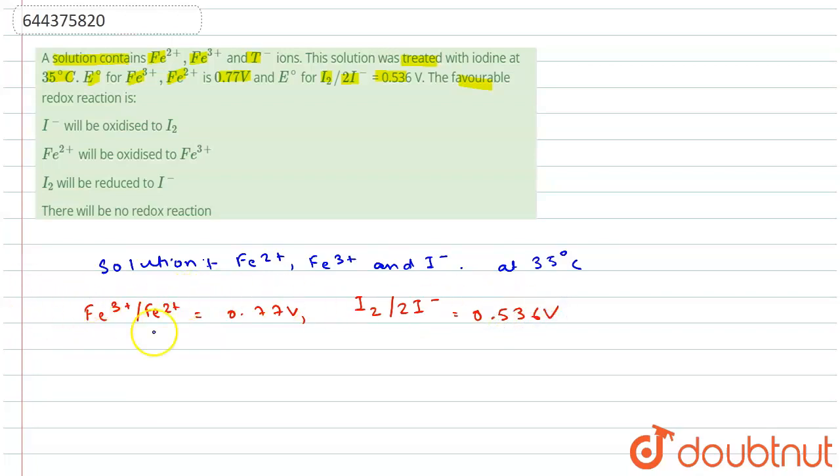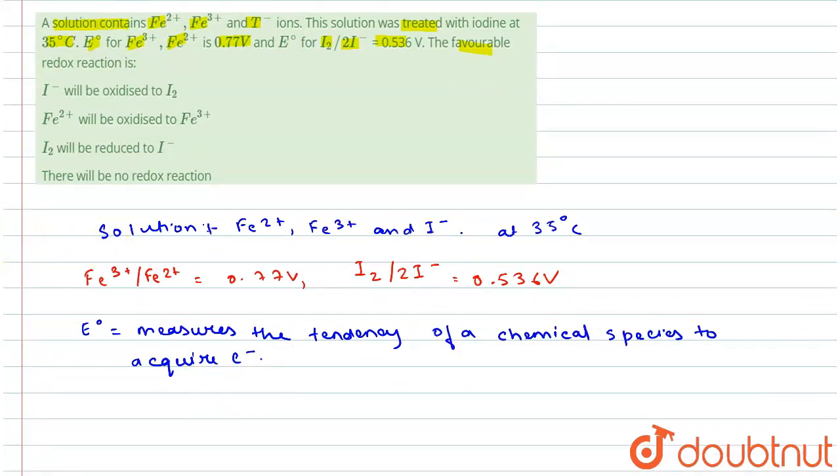Now, reduction potential is also known as redox potential and is denoted by E°. E° measures the tendency of a chemical species to acquire electrons and thereby be reduced.